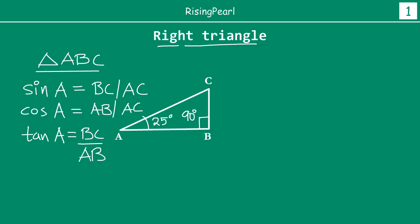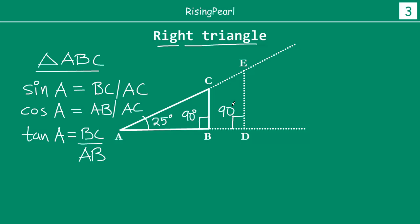What we want to do now is extend line AC indefinitely, and extend line AB indefinitely. We take a random point E on this extended dotted line, take any point D, and drop a perpendicular so that this angle is 90 degrees. So we now have triangle AED highlighted in blue.